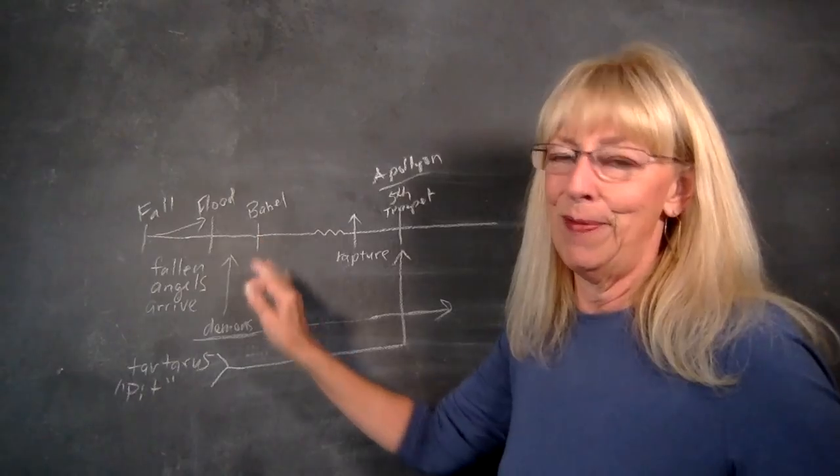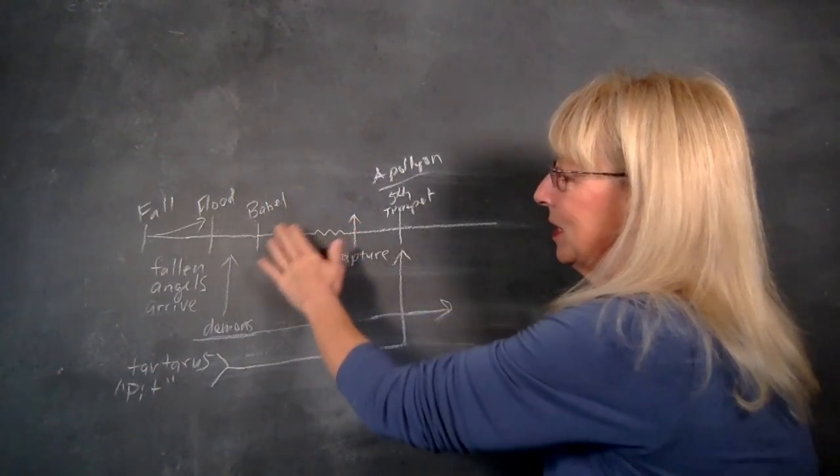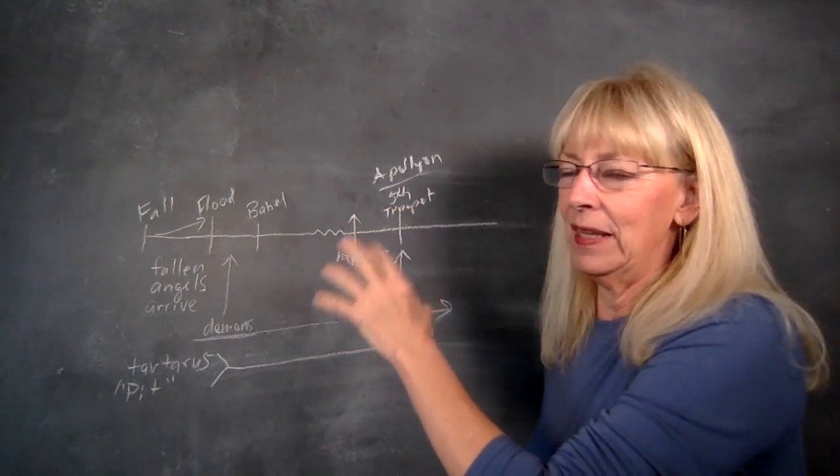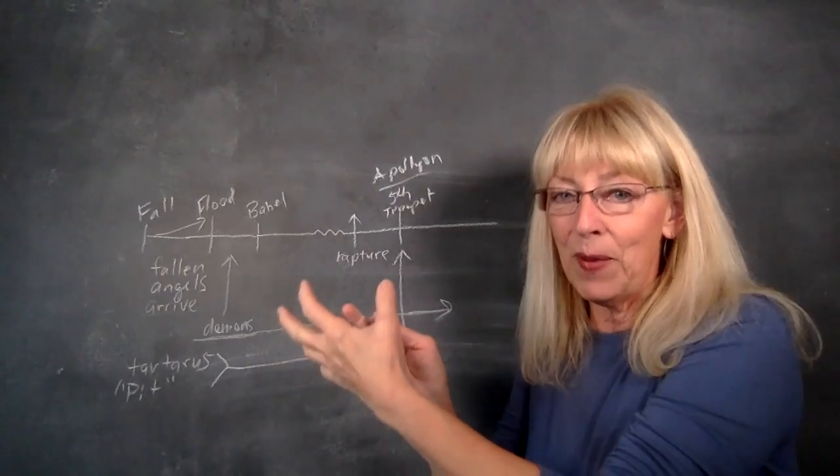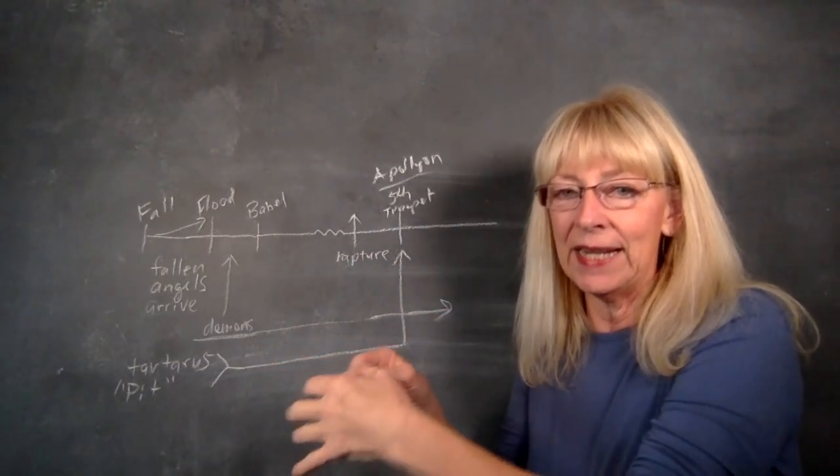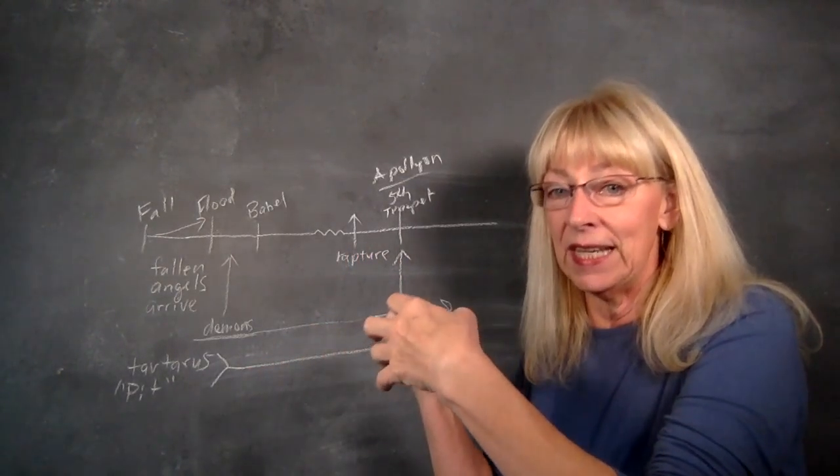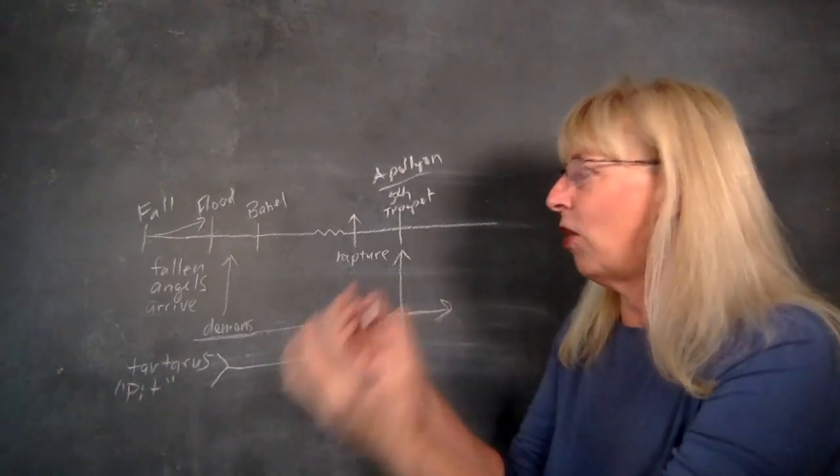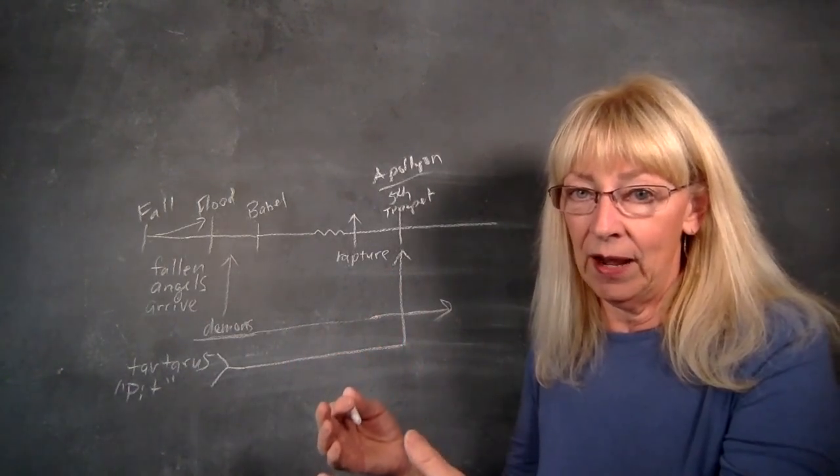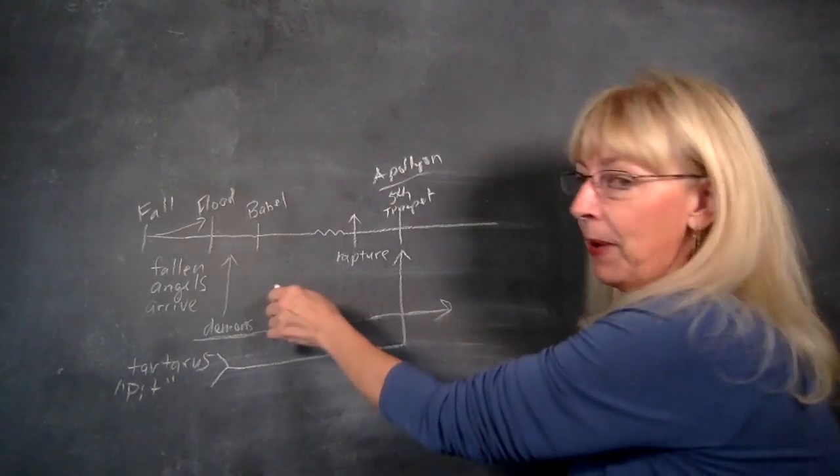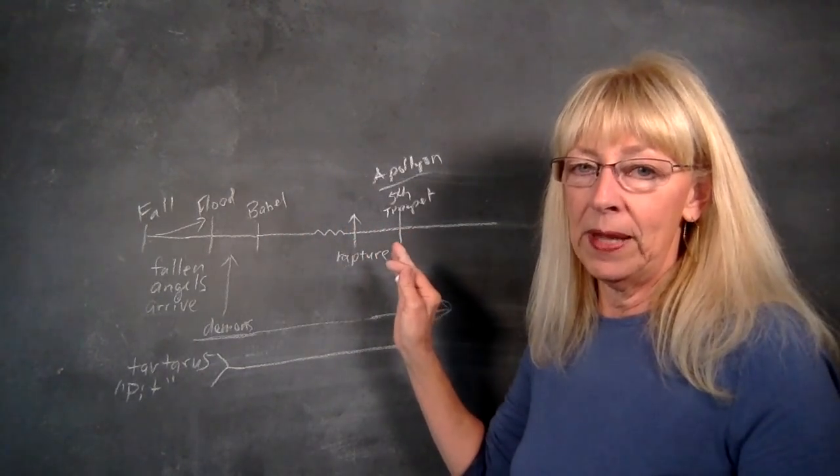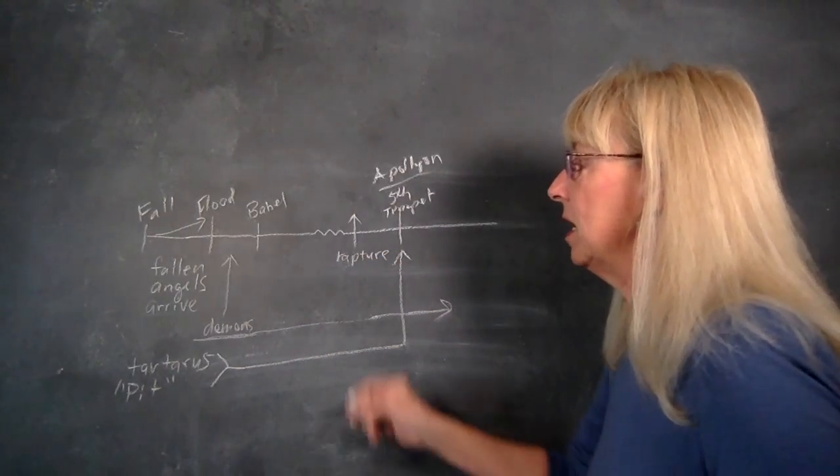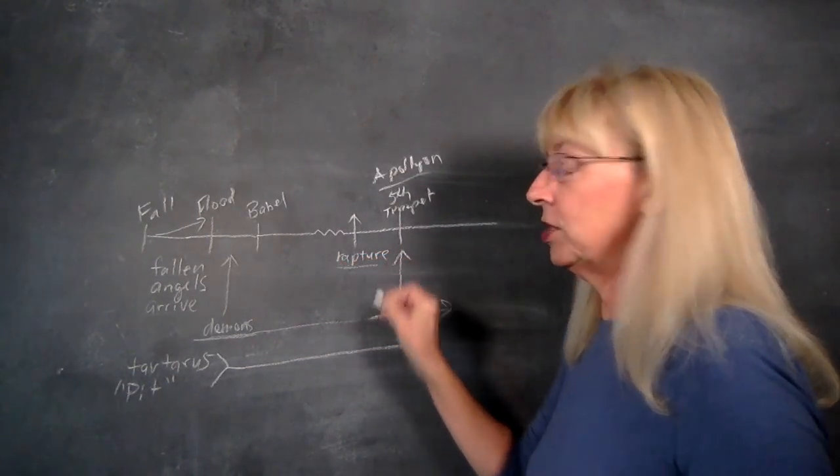Time goes by—thousands of years go by. Babel is still in the world right now: the seeds of Babel, the people, Babylonian ideas, Babylonian-type civilization, Babylonian hierarchical structure. All of this is still in the world right now, gaining power and momentum toward the time of the end.